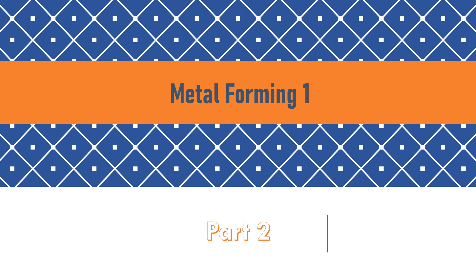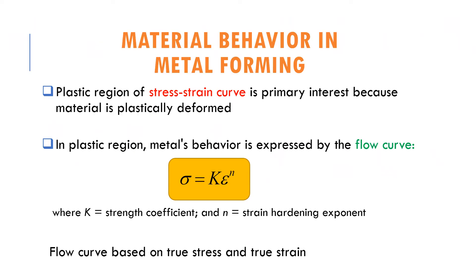We are going into part 2 of metal forming 1. The topic we are going to discuss is the material behavior in metal forming. Since the material will go through plastic deformation, the stress-strain curve will be the primary interest in this subject.